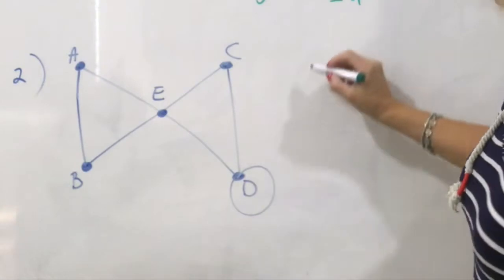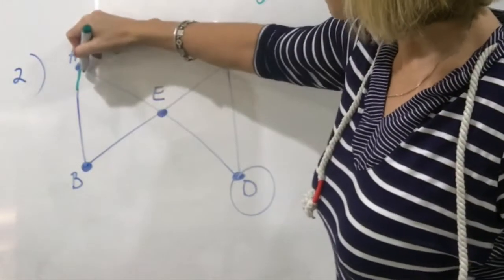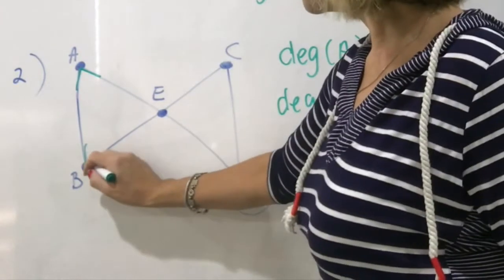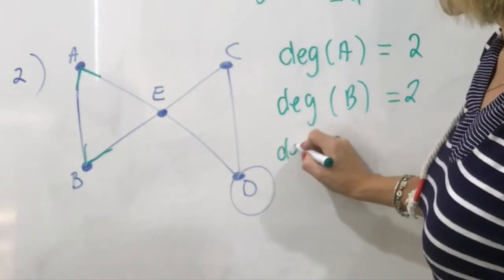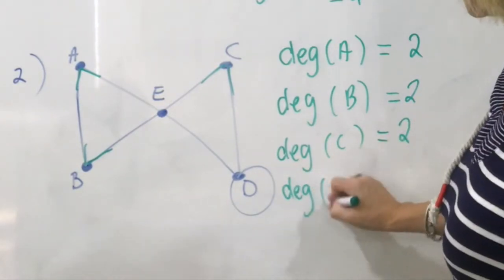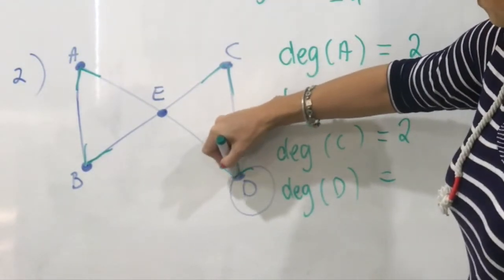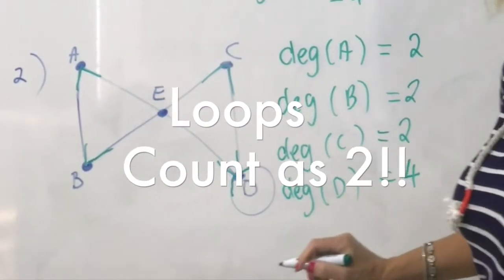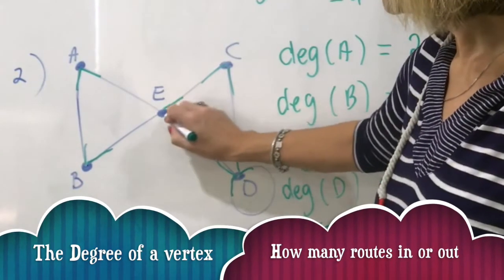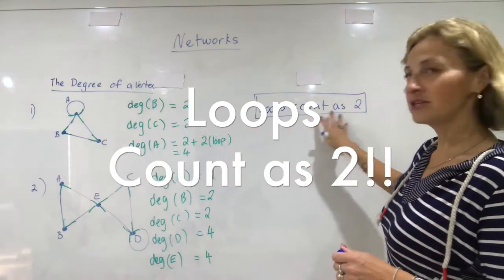Let's work through the second example. The degree of A is 2, the degree of B is 2, the degree of C is 2. For D, you have to be careful because of the loop — counting the loop as 2, the degree of D is 4. The degree of E is 4 as well. Just don't forget that loops count as 2.